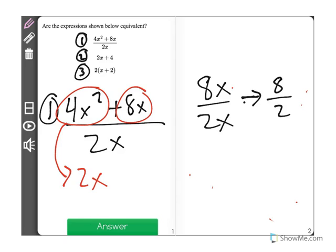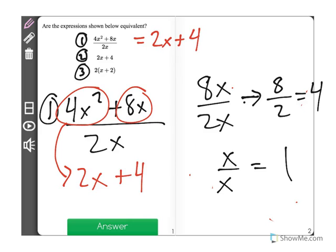8 divided by 2 is equal to 4. And x divided by x, well, any number divided by itself equals 1. So this expression is equal to 2x plus 4. That's its simplified version.